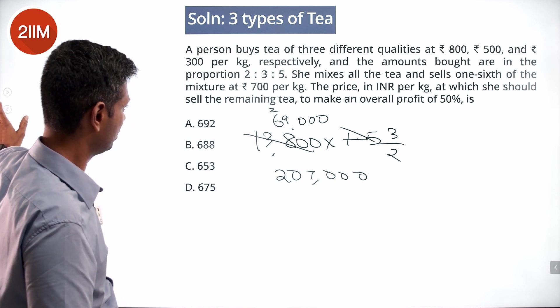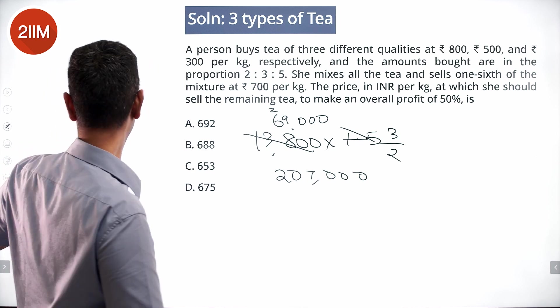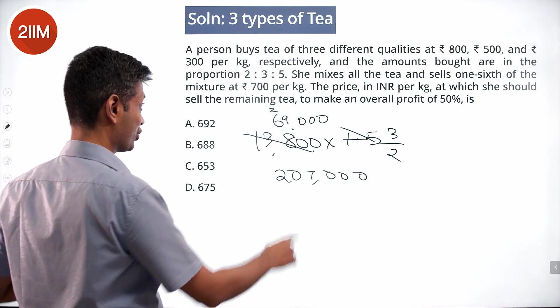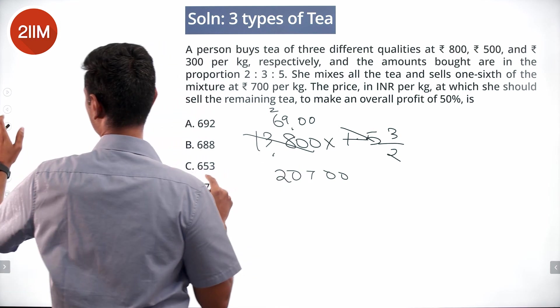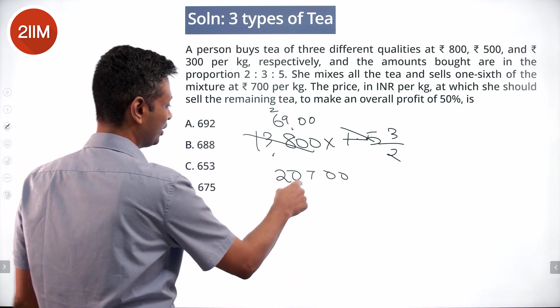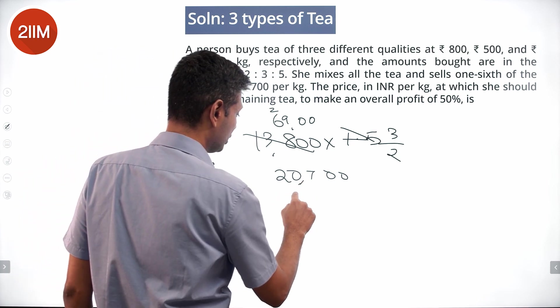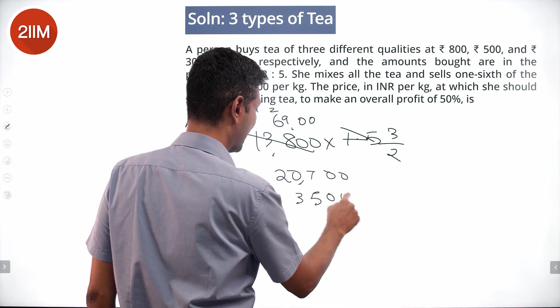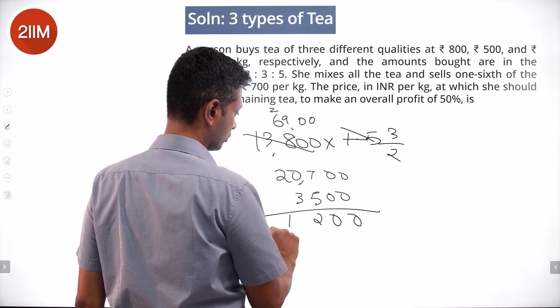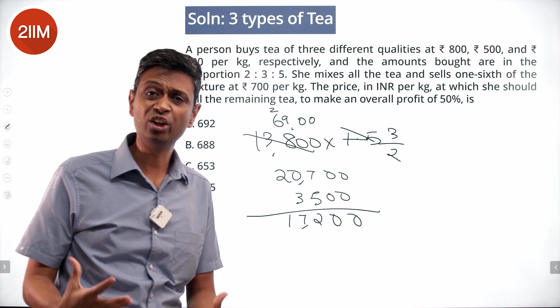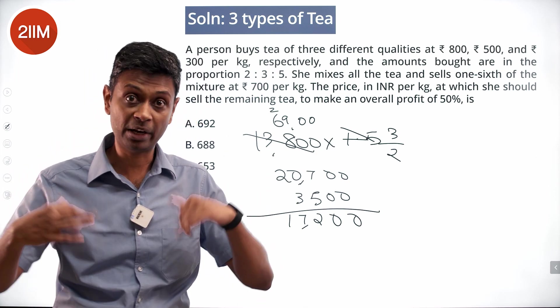Let me just check this number. 13,800, I just added a 0. Unfortunate, I will fix that. So 20,700 rupees she needs to make totally. Of this 3,500 she already has in her bag. 17,200 rupees she needs to realize beyond what she already has.